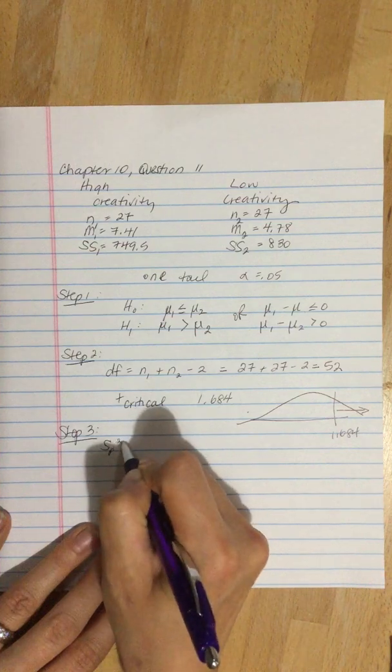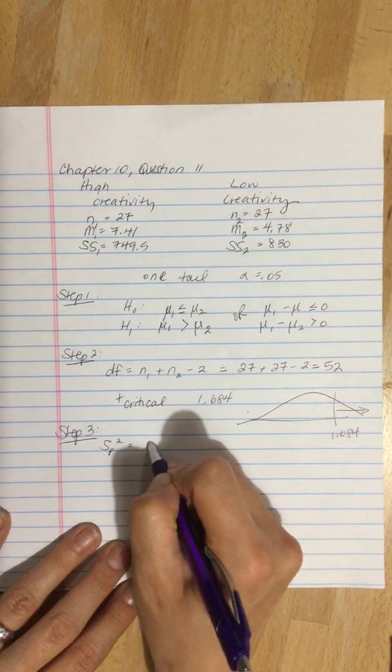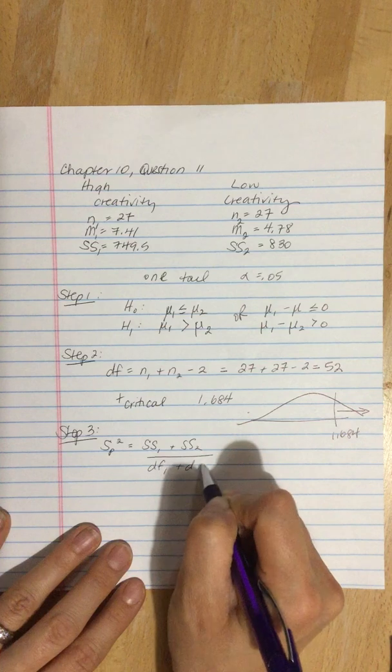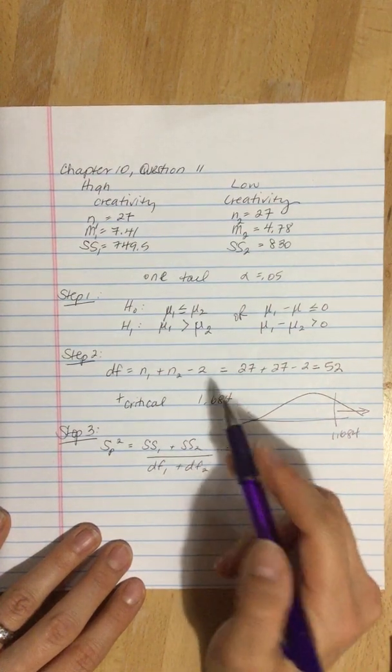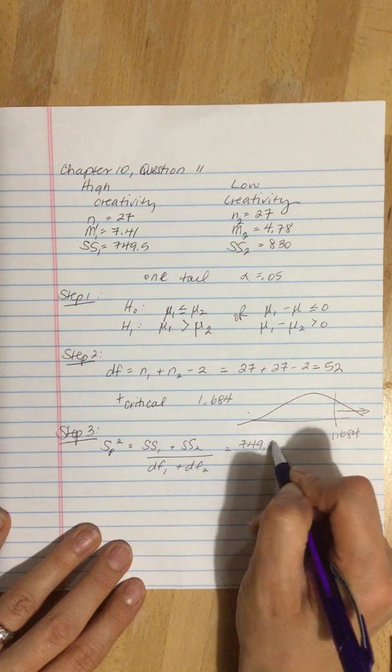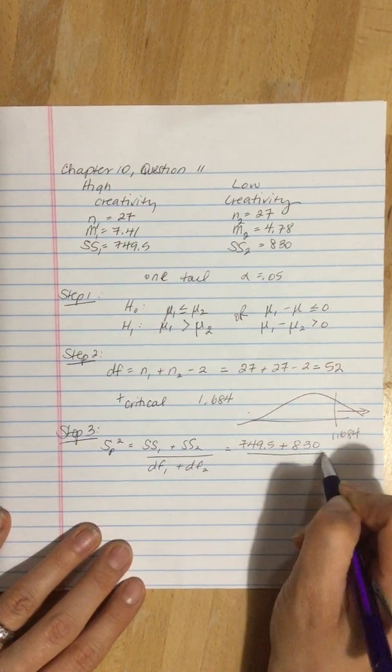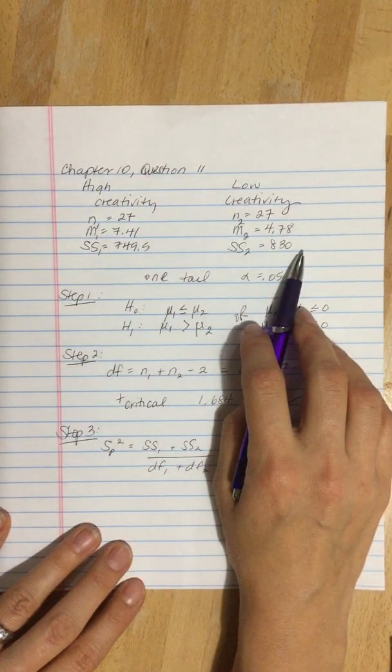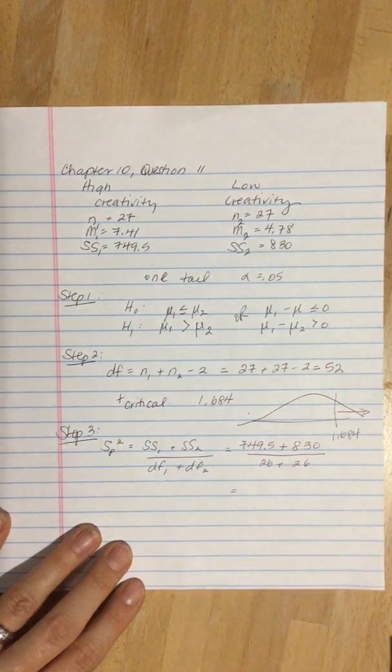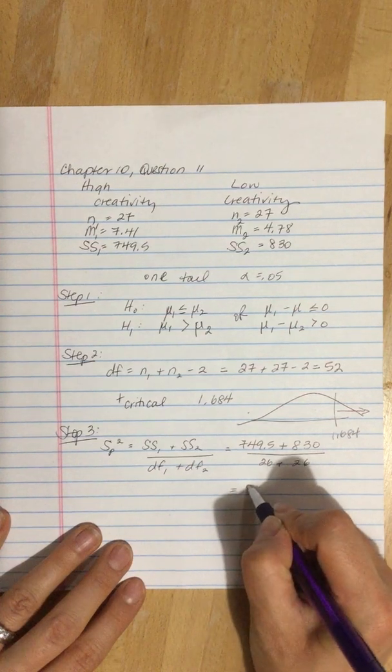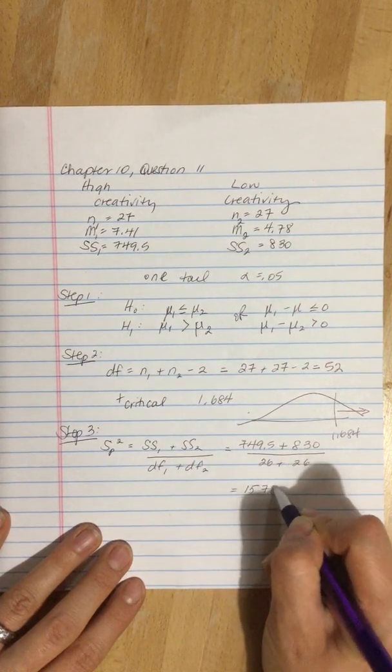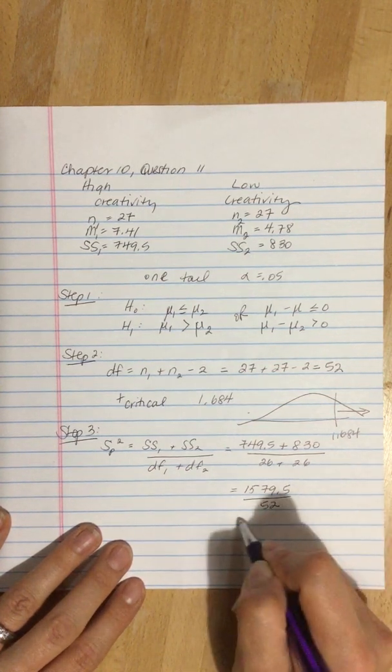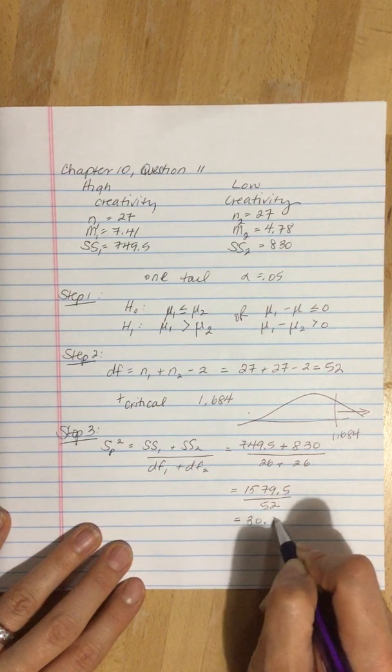So if we do the pooled variance, our formula is sum of squares 1 plus sum of squares 2 divided by degrees of freedom 1 plus degrees of freedom 2. So that's 749.5 plus 830 divided by 26 plus 26, that's degrees of freedom for this one plus the degrees of freedom over here. So that is 1579.5 divided by 52, which is equal to 30.375.